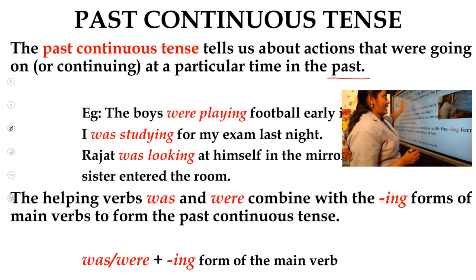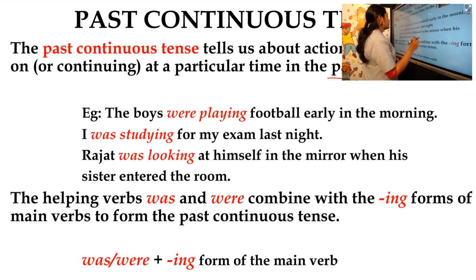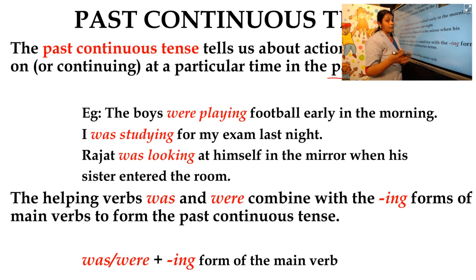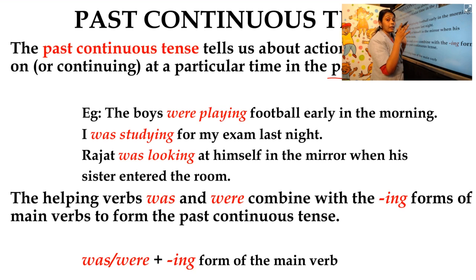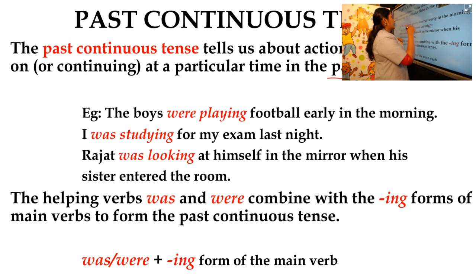The past continuous tense tells us about actions that were going on or continuing at a particular time in the past. For example, look at the example here: 'The boys were playing football early in the morning.' Here the action is continuing in the past — early in the morning they were playing football. The action was continuing at a particular time in the past.